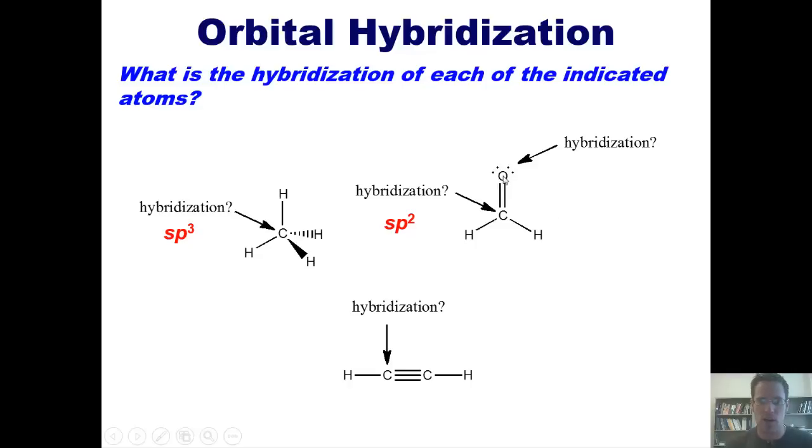Now I'll look at this oxygen. The oxygen has a carbon down bottom, a set of lone pairs to the left, and a set of lone pairs to the right. Yes, lone pairs do count as a thing. That is three things. So its hybridization is also sp2.